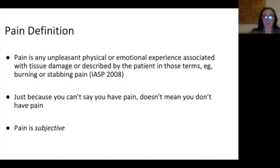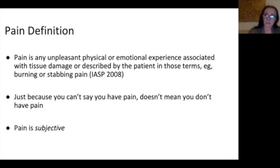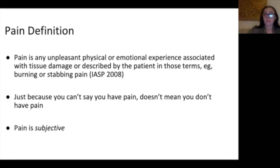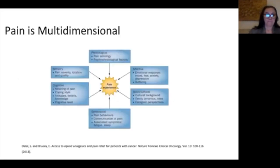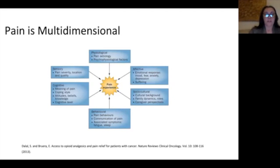What's the definition of pain? Pain is any unpleasant physical or emotional experience associated with tissue damage, or described by the patient in those terms, such as burning or stabbing pain. Remember that just because you can't say that you have pain, it doesn't mean that you don't have pain. Pain is subjective — my pain is different from your pain. And remember that pain is multidimensional: there are physiological factors, emotional factors, sociocultural factors based on your background, and family dynamics.